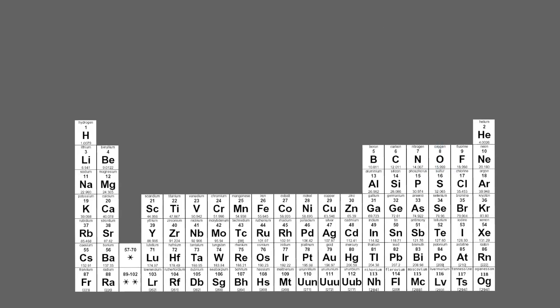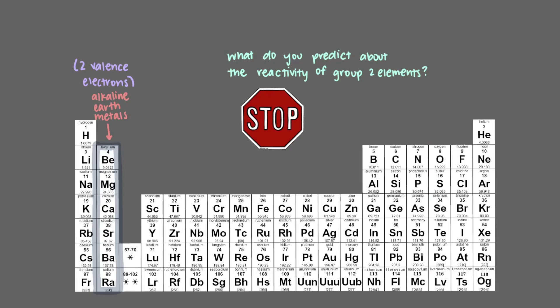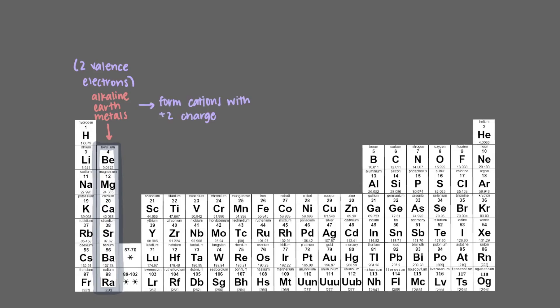Let's try one more. Alkaline earth metals are found in the second column of the periodic table, group 2, an example of which is calcium. These elements have 2 valence electrons. What do you predict about the reactivity of group 2 elements? Since group 2 elements have 2 valence electrons, both of these valence electrons will be lost to form cations with a plus 2 charge.